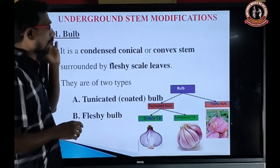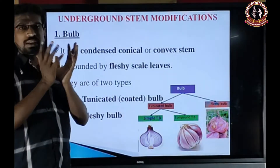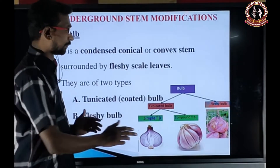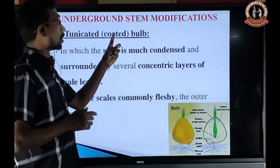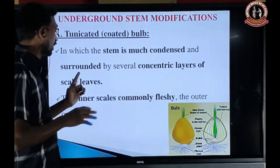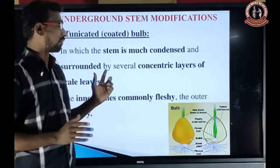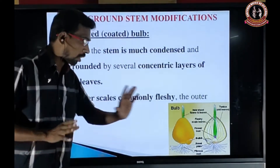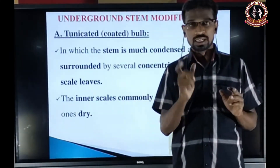There are two types of bulb: tunicator and scaly bulb. In the tunicator or coated bulb, the stem is much condensed and surrounded by several concentric layers of scale leaves. The inner scales are fleshy and the outer ones are dry — like in onion and garlic. The tunicator bulb is further classified into simple tunicator (example: Allium cepa — onion) and compound tunicator (example: Allium sativum — garlic).